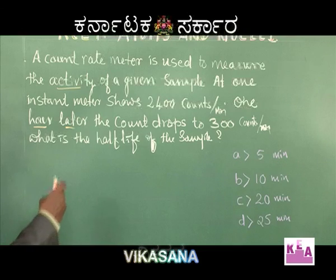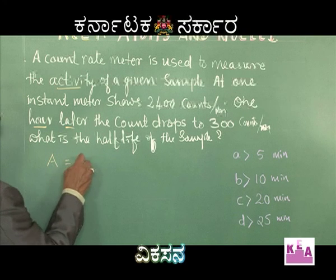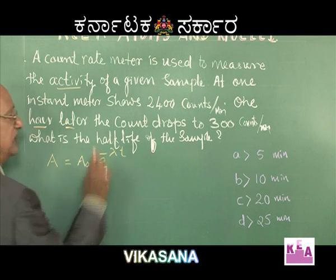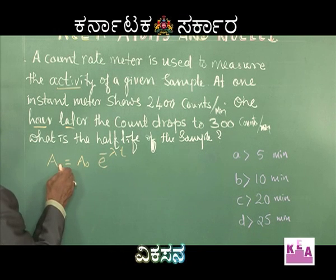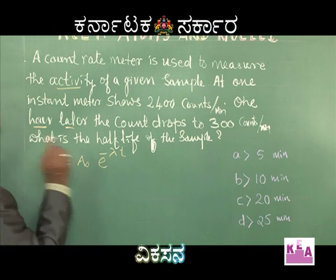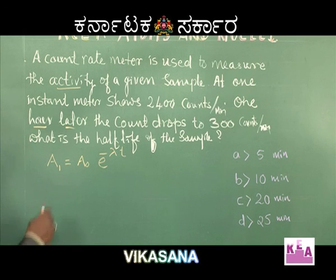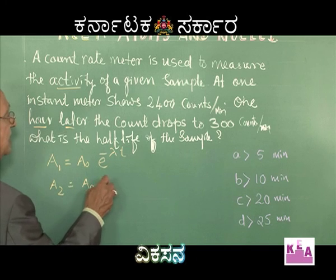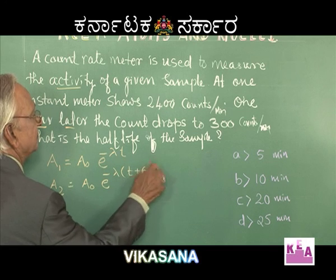We recall that activity A = A₀ e^(−λt). This is the activity of a sample at any instant of time t. Taking A₁ at time t, and the activity after one hour as A₂, we write A₂ = A₀ e^(−λ(t+60)).